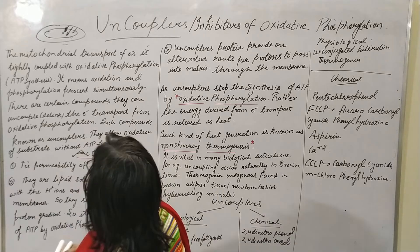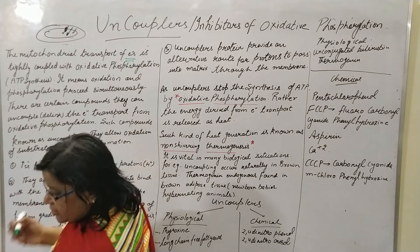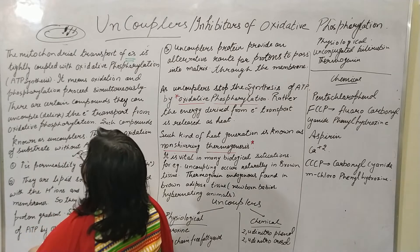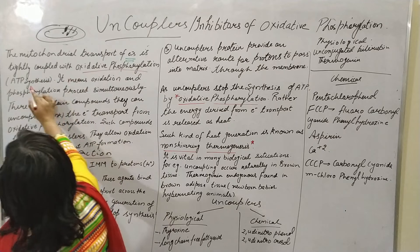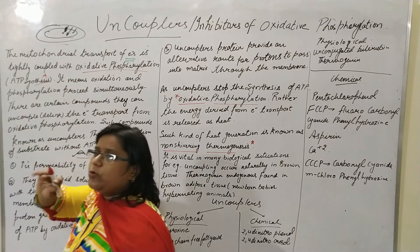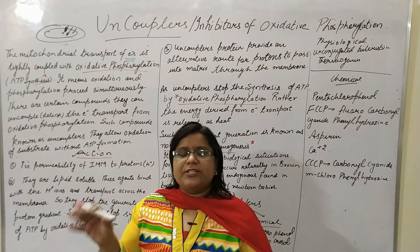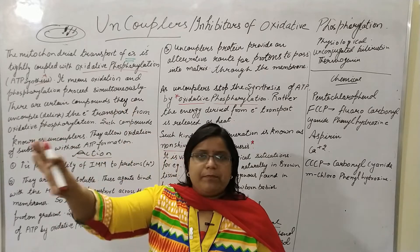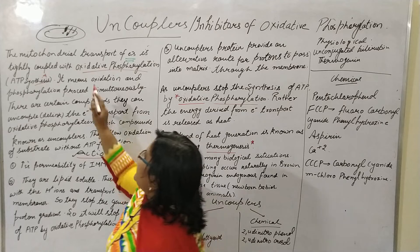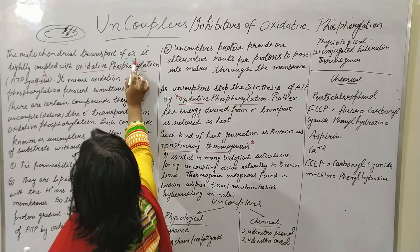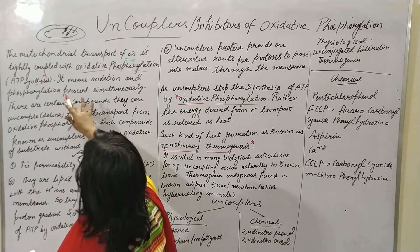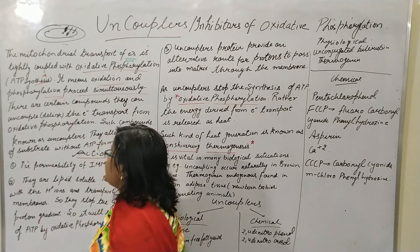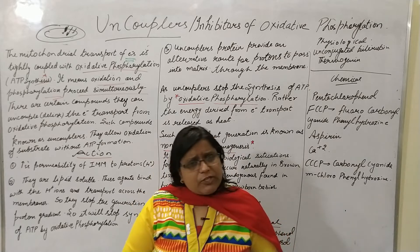The mitochondrial transport of electrons is tightly coupled with oxidative phosphorylation. If you don't know about oxidative phosphorylation, just type 'oxidative phosphorylation MS Science Academy' and you can get my lecture. The oxidative phosphorylation and electron transport are tightly coupled, meaning oxidation and phosphorylation proceed simultaneously.